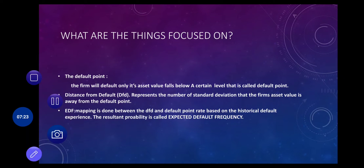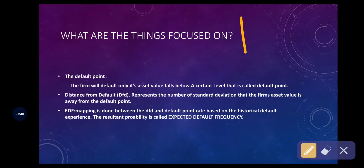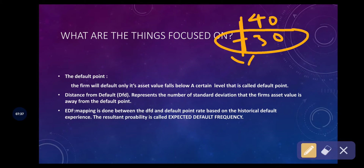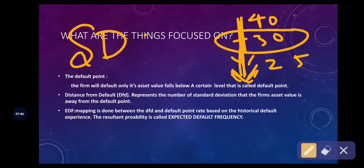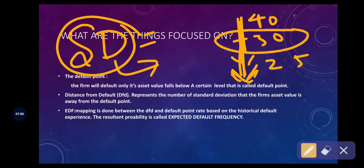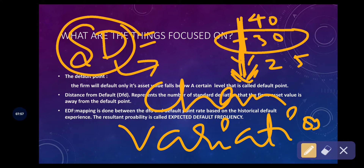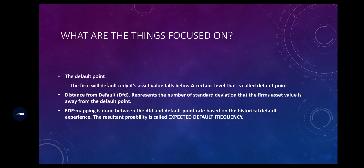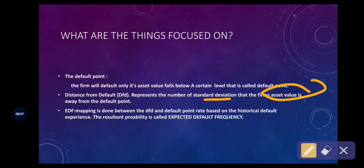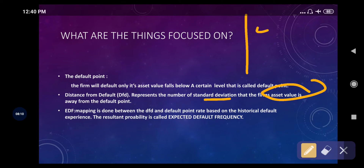Distance from Default means: when the asset value is falling — for example from 40 lakhs down toward the fixed level of 30 lakhs, and further to 25 lakhs — we calculate the standard deviation. Standard deviation is used to measure the variation and changes in the asset value. They calculate the standard deviation of the asset value to see how much it is falling below the default point.